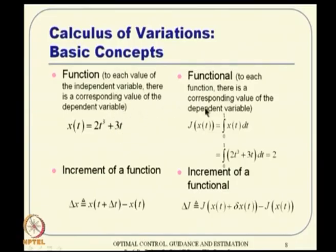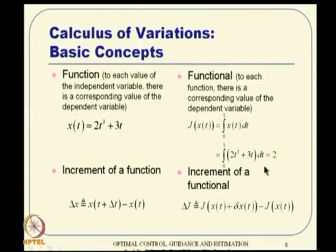A function maps each value of the independent variable to a corresponding value of the dependent variable. But for a functional, to each function there is a corresponding value of the dependent variable - that is the difference. So here the difference is: to each value of the independent variable there is a corresponding value (function), whereas to each function there is a corresponding value of the dependent variable (functional).